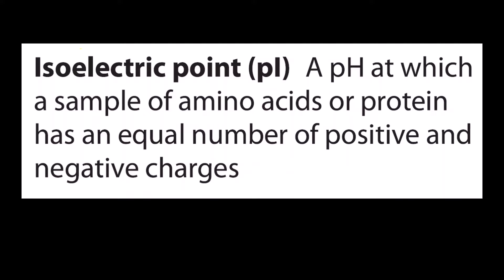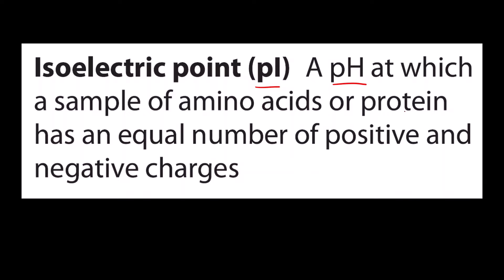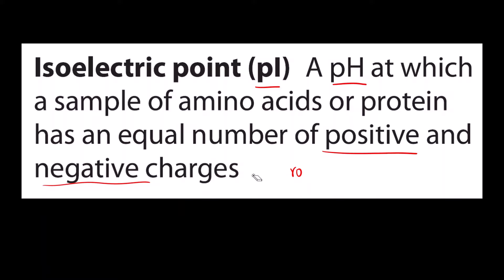Let us understand the definition again — this we had seen in the last video as well. What is isoelectric point? It is denoted by PI. So sometimes if they tell you to calculate PI, you should not get confused — PI is nothing but isoelectric point. It is the pH at which the sample of amino acid or protein has equal number of positive and negative charges. So overall, at isoelectric point, the amino acid has a zero net charge — positive and negative charges are equal.